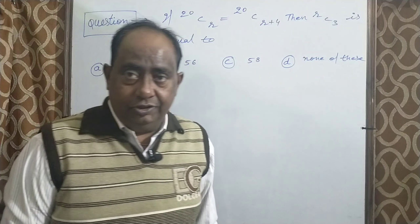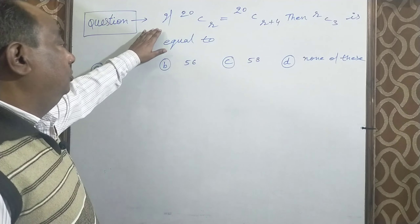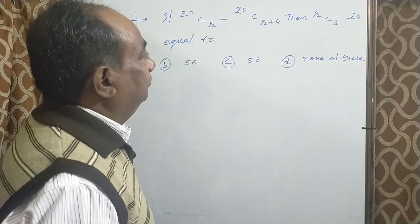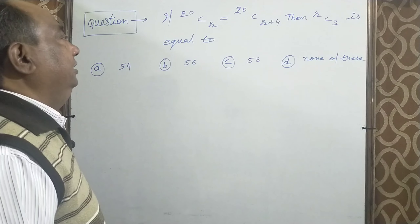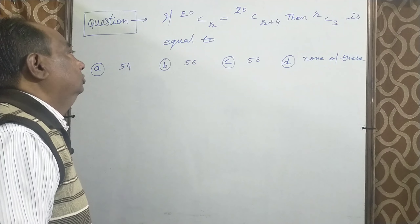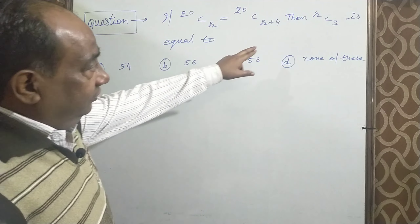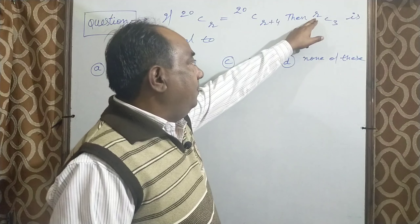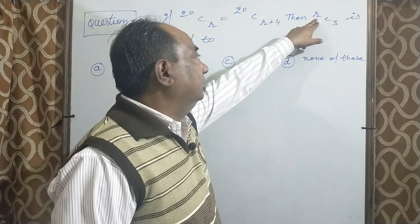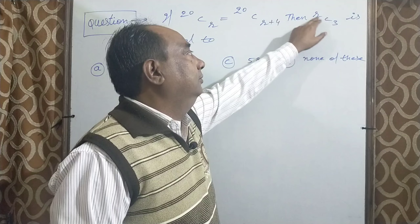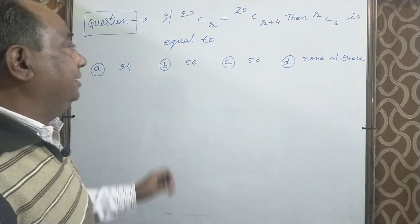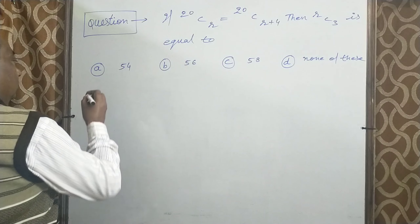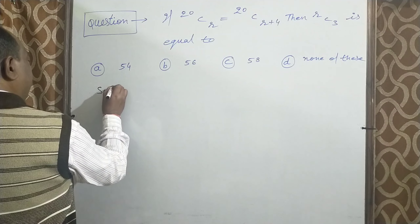Next question: if 20CR equal 20C(R+4), then RC3 is equal to? तो यहां सबसे पहले R की value find करनी है, उसके बाद R की value को substitute करेंगे, फिर NCR का formula apply करते हुए answer देना है।